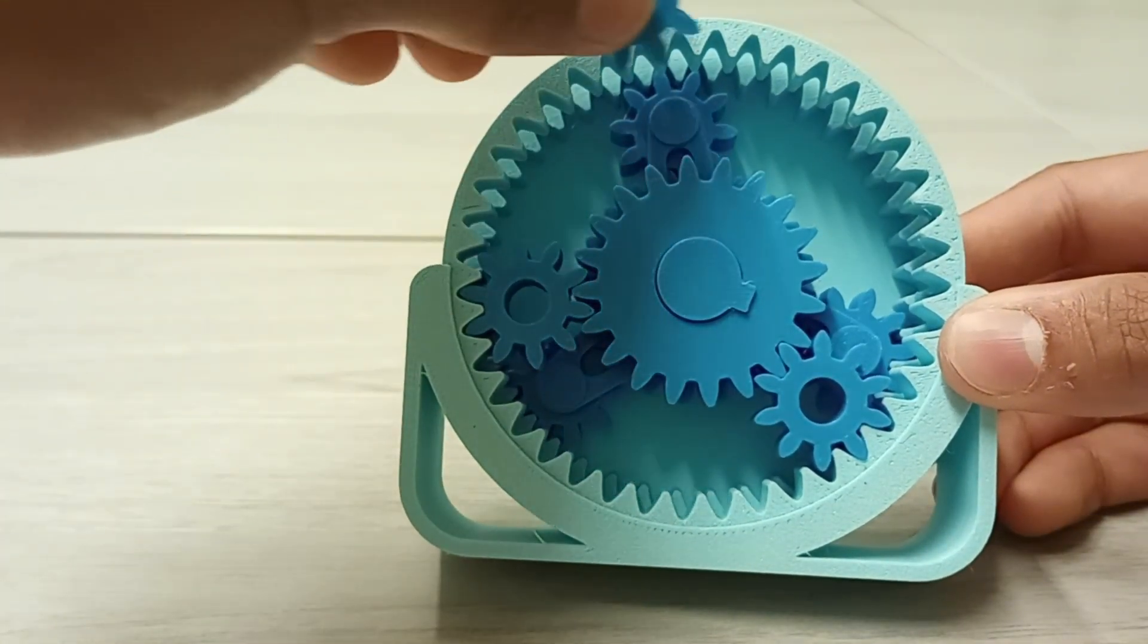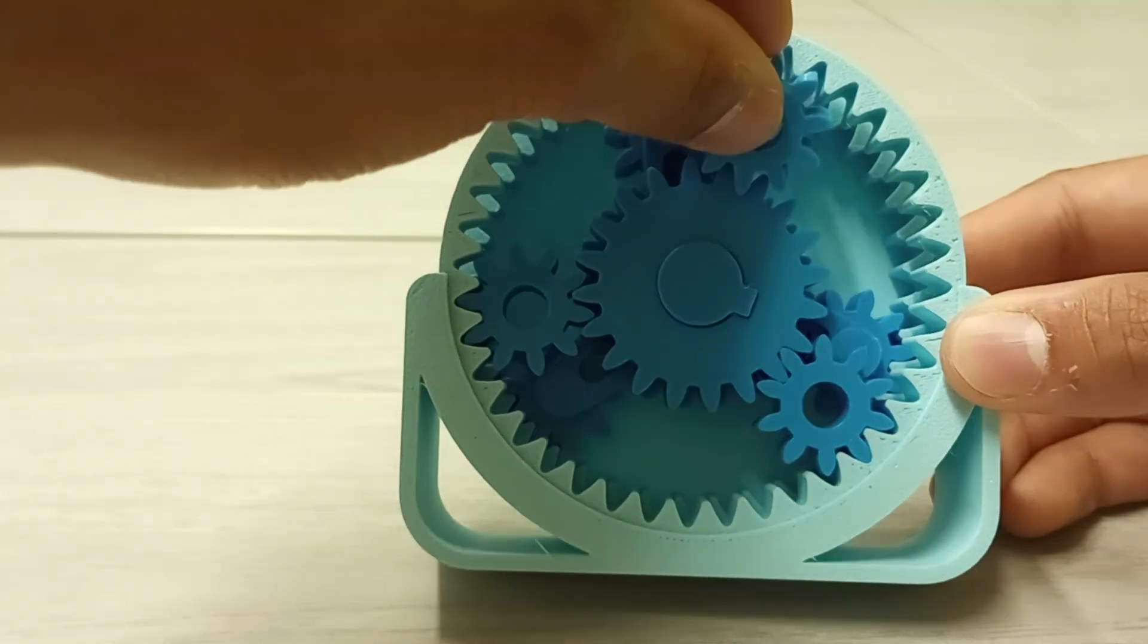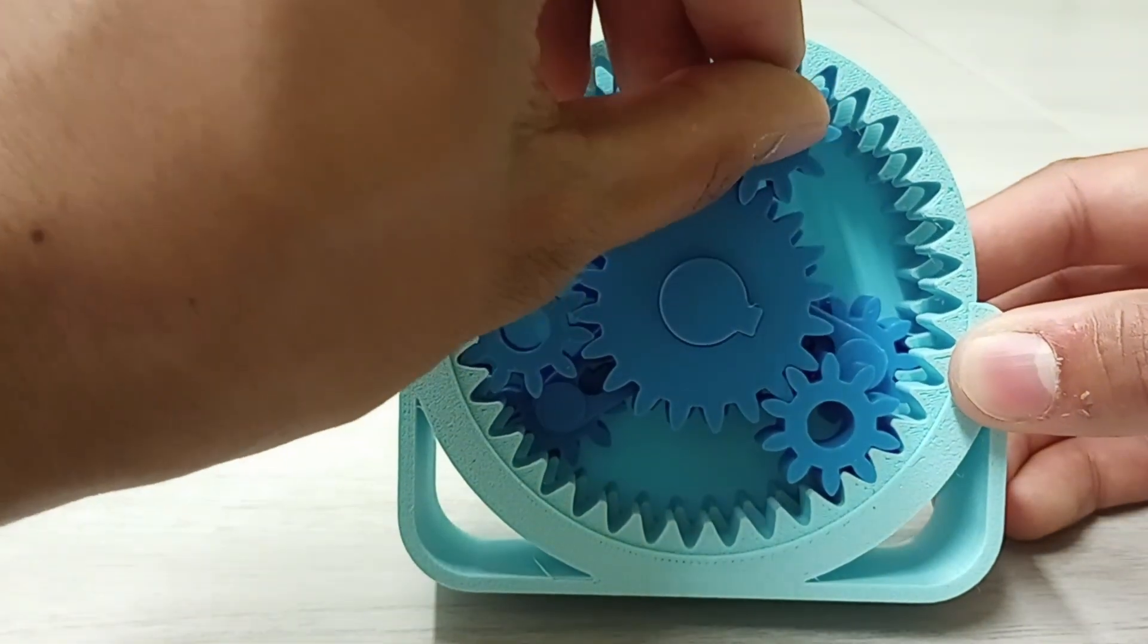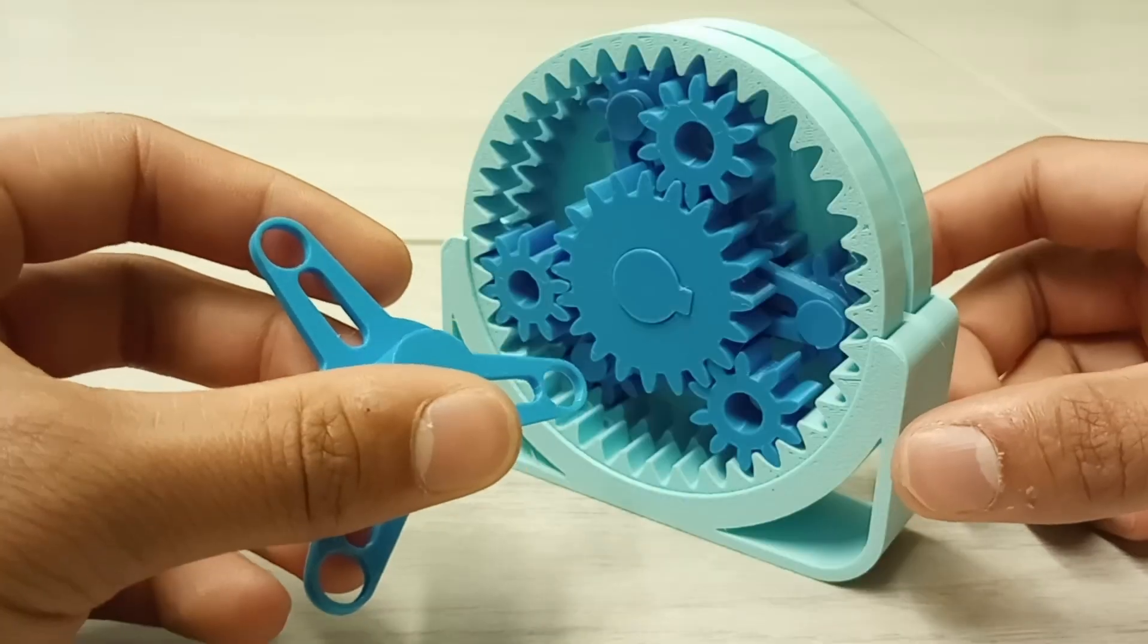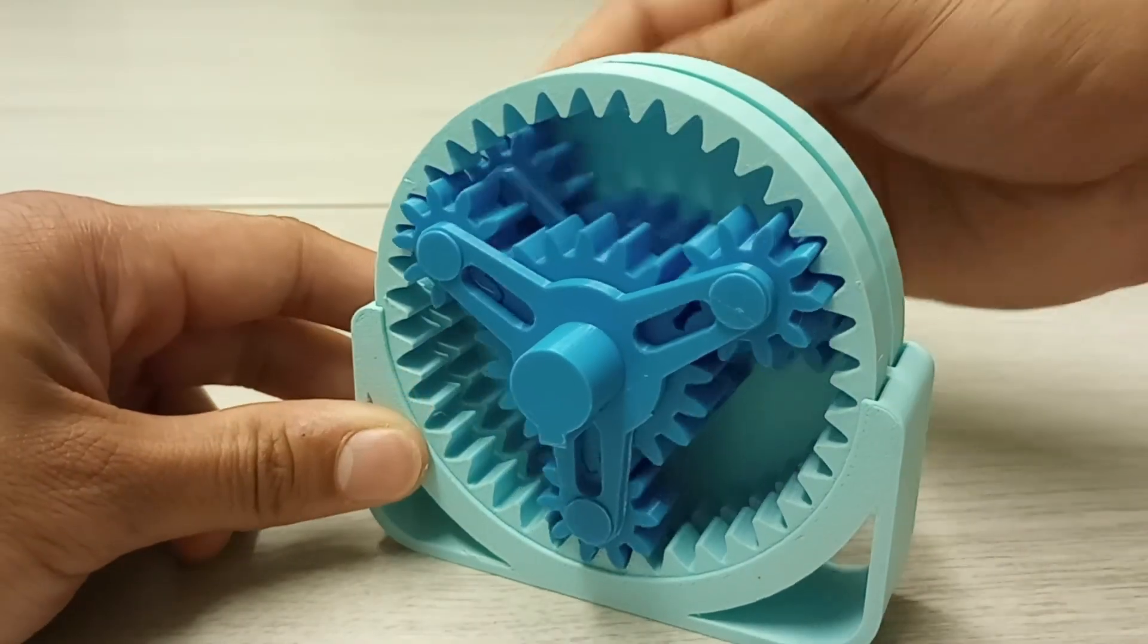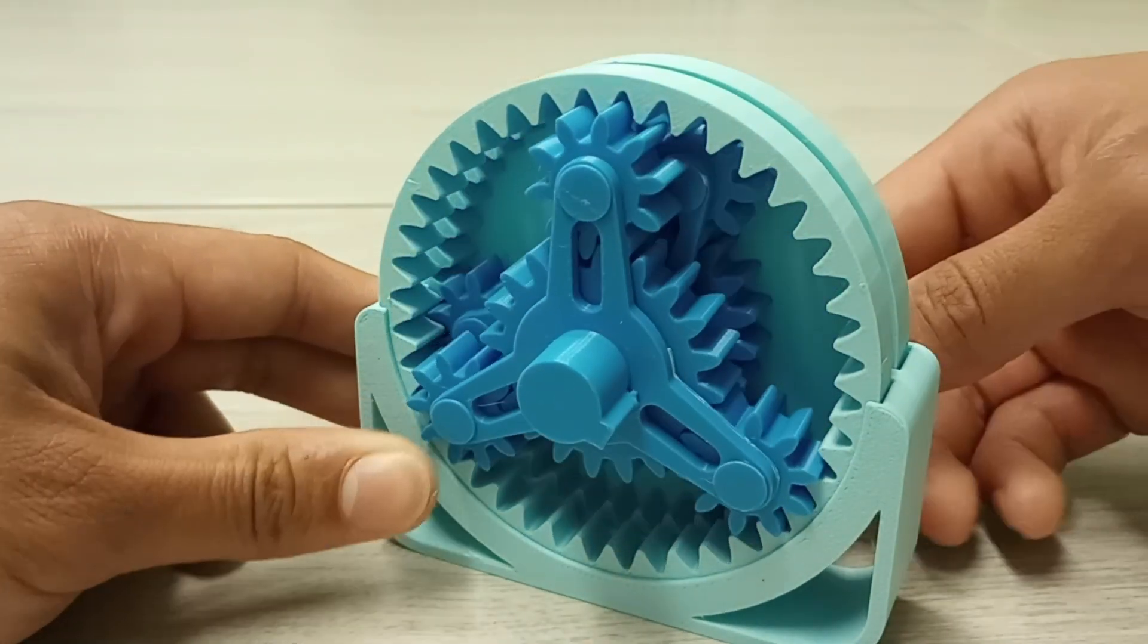Sun gear B will then mesh with yet another set of planetary gears to produce an even slower speed output. And that final speed will be transferred to an output shaft by another planet carrier, planet carrier B.